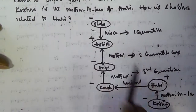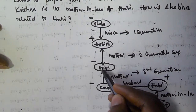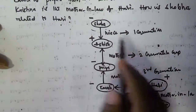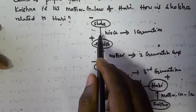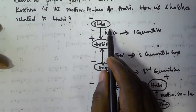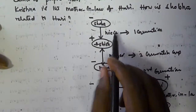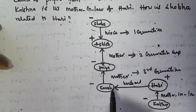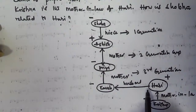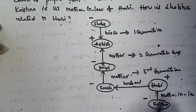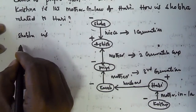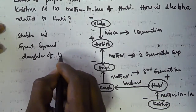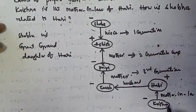Now we have to find the relationship between Shobha and Hari. Kamala is the mother of Priya, and Priya is the mother of Ashish, so Priya is the grandmother of Shobha, and Kamala is the great-grandmother of Shobha. That means Shobha is the great-granddaughter of Kamala. If Shobha is the great-granddaughter of Kamala, then Shobha is also the great-granddaughter of Hari, because Hari is the husband of Kamala. So, Shobha is the great-granddaughter of Hari.